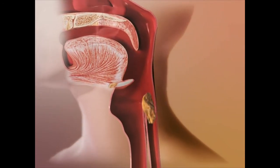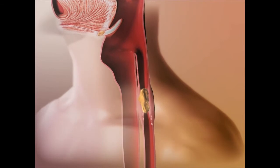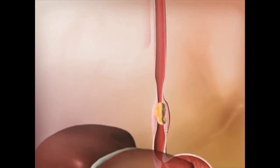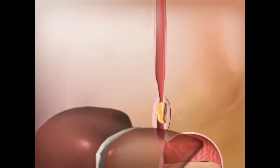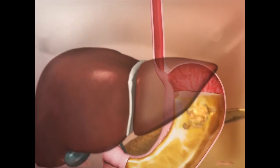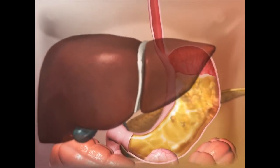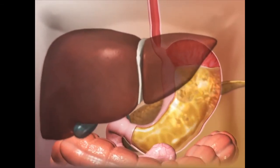The bolus then passes from the oropharynx to the pharynx and into the esophagus. Involuntary muscular contractions, called peristaltic waves, move the bolus down the esophagus and into the stomach. Peristaltic waves continue the mechanical breakdown of food in the stomach.